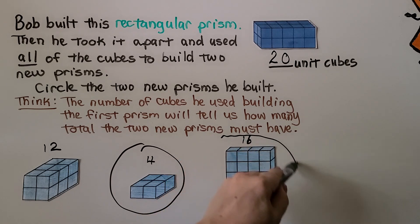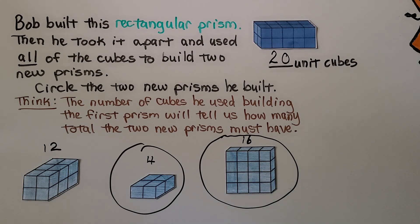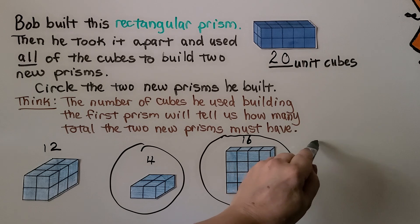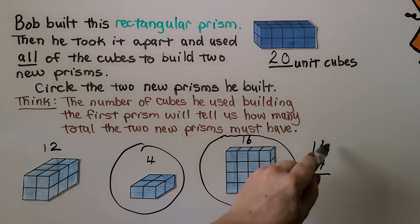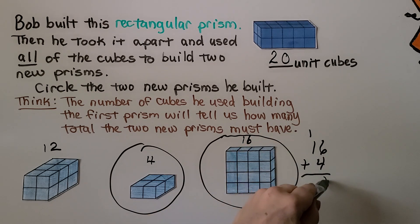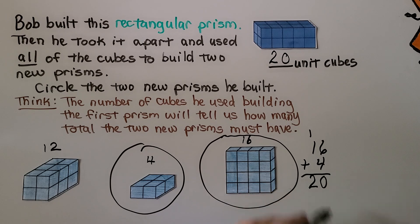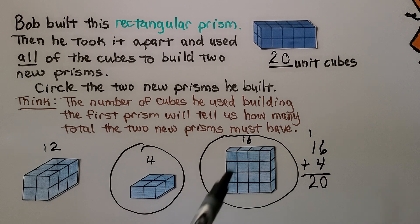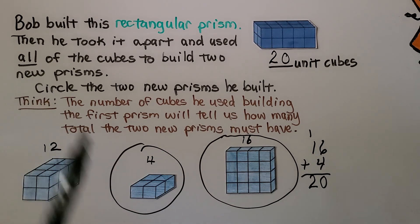He could have used his cubes to build these two prisms. We have sixteen plus four — six plus four is ten, regroup and put zero down, and ten plus ten is two tens, equal to twenty. These must be the two prisms he built when he took this one apart and used all of the cubes.